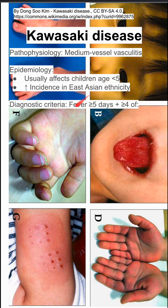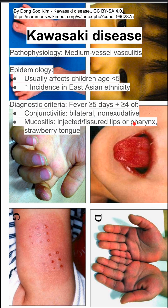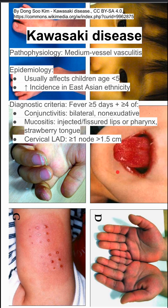The diagnostic criteria: patients have fever for at least five days with at least four of the following symptoms. Conjunctivitis that is bilateral and non-exudative. Mucositis — injected or fissured lips or pharynx with strawberry tongue. You can see these diagnostic features in the background.